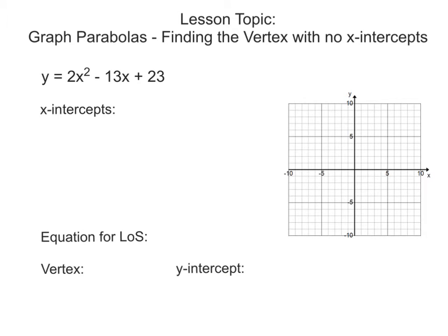The lesson topic for this video is graph parabolas, specifically finding the vertex when there are no x-intercepts. In the previous lesson, you learned that once you find your two x-intercepts, you average them to find the line of symmetry, which leads to the vertex. But what happens if there are no x-intercepts — if the parabola is up here? How do we find the equation for the line of symmetry and the vertex?